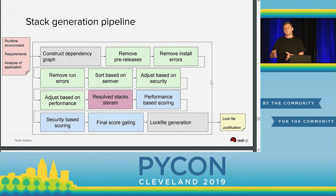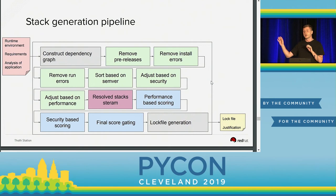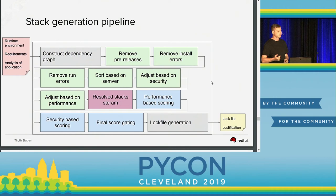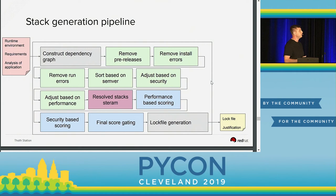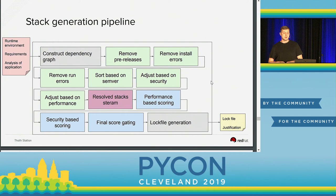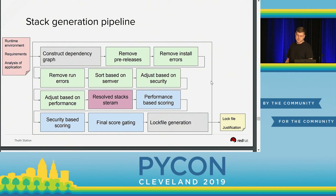This is accomplished in Thoth using the Stack Generation Pipeline — that's the term we use. The input is the runtime environment: information about where you run it, what hardware, what CPU, and so on. Then there are provided requirements — if you are familiar with a requirements.txt file, that's basically the requirements provided. There is also input from static analysis of your source code and your application. The Stack Generation Pipeline adjusts the dependency graph and how the resolution algorithm produces stacks. Then there is a stream of stacks that are subsequently scored and gated based on a final score. The output is a log file stating a fully pinned-down software stack — specific versions that should be installed — together with justification for why you should install these dependencies instead of the latest ones.